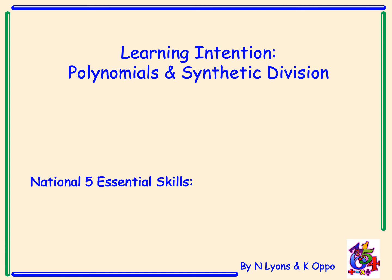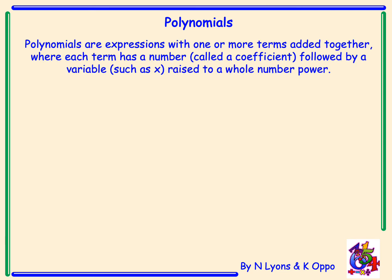Polynomials and Synthetic Division. The National 5 essential skill for this topic is factorising. Polynomials are expressions with one or more terms added together, where each term has a number called a coefficient, followed by a variable such as x raised to a power. For example, 3x⁵ + x³ + 2x² - 6 is a polynomial, as is 2x¹⁸ + 10.